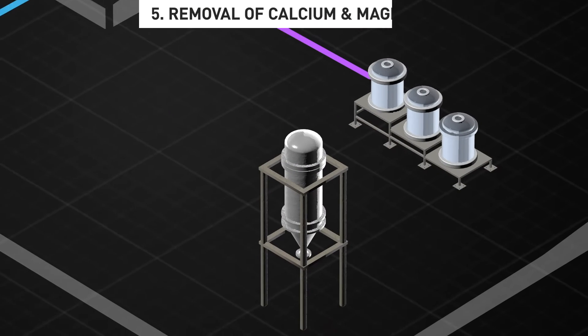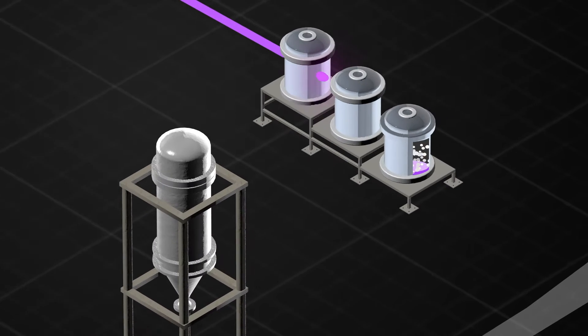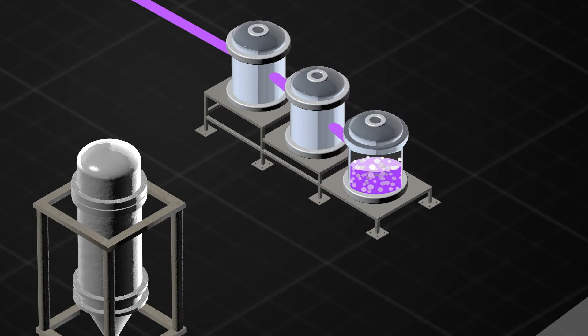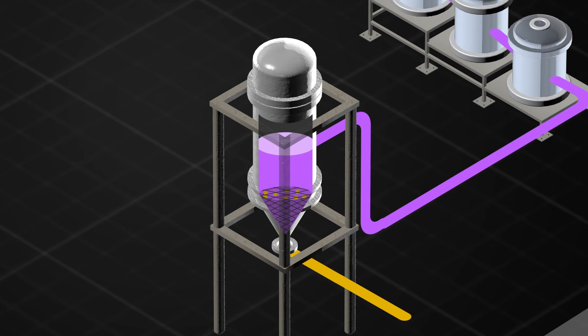The concentrated lithium solution requires further purification before it can be converted into the product. Reagents are added to precipitate impurities, which are settled in a thickener and then pumped to the waste treatment section where they are dissolved in hydrochloric acid to form benign chloride compounds.